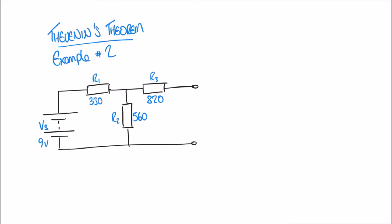Step one, if you remember, was to use the voltage divider rule to work out the voltage on the output terminals. I'm going to label these terminals A and B. Now, this circuit has three resistors in it: R1, R2, and R3.